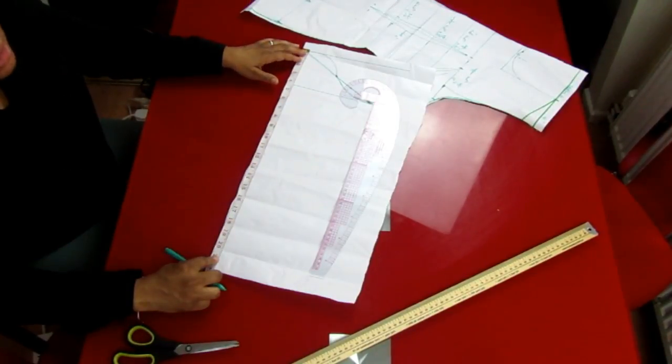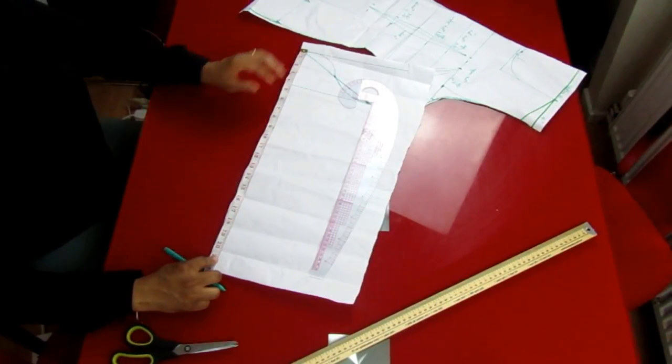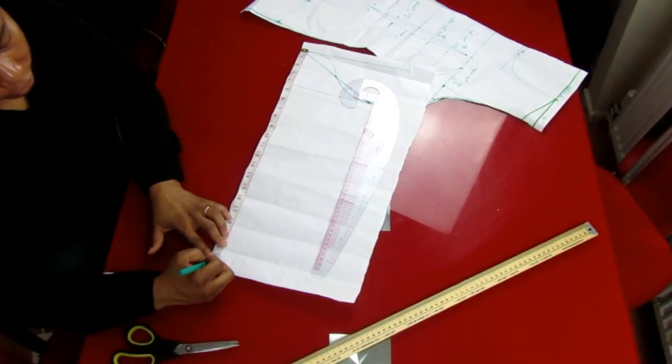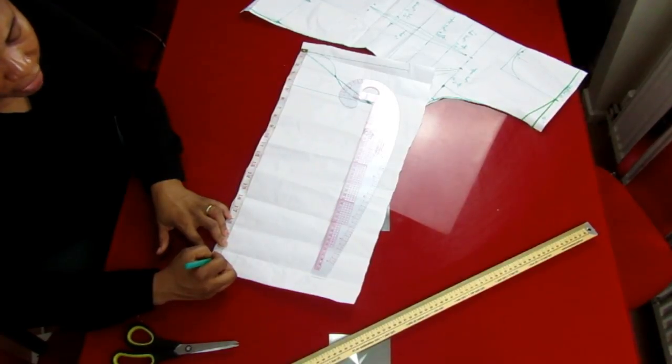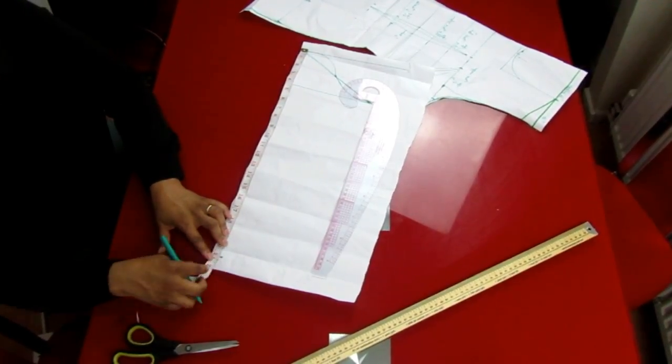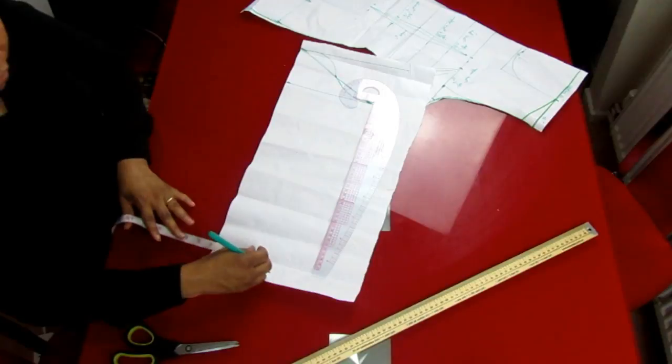Measure your sleeve length, where you want the sleeve to be, then you place your wrist measurement there. So the one I'm working with is altogether 10 inches. So you divide it by two—is 5 inches. So you place 5 inches mark here.